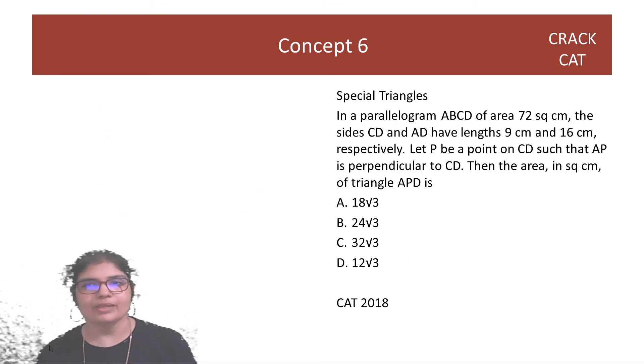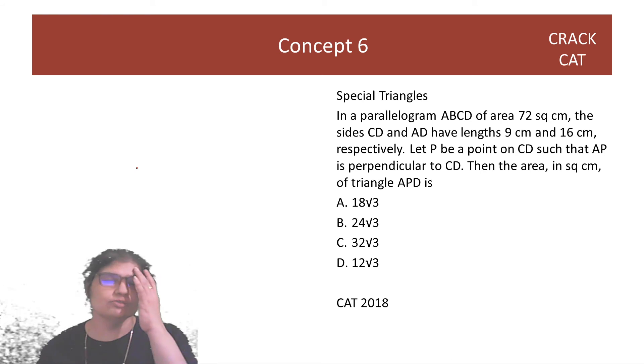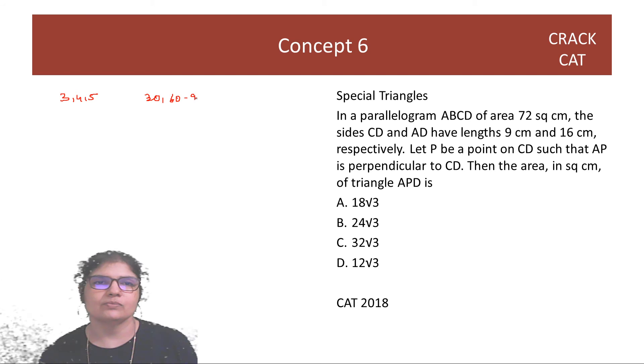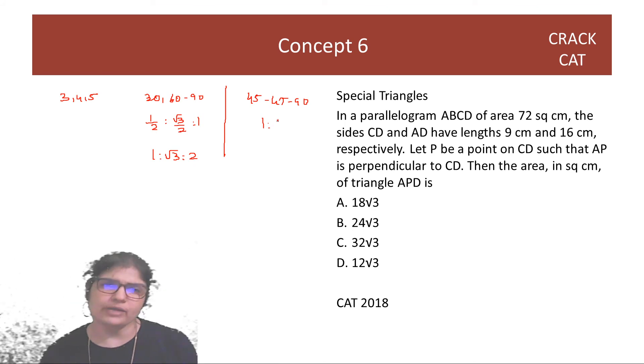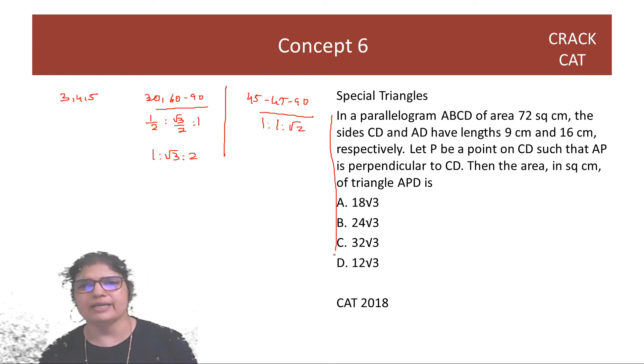The sixth concept is know some special triangles. Which special triangles? We have already discussed 3, 4, 5. This is an important triangle for us. The other two triangles that I want you all to know is the 30, 60, 90 triangle. So what is the ratio of the sides? It is half is to root 3 by 2 is to 1 or you can also see this as 1 is to root 3 is to 2. This is another triangle. And the third triangle is the 45, 45, 90. So often somewhere in a triangle if you see a root 2, you know that 45, 45, 90 is involved. If you see a root 3, you know that this is somewhere involved. So in this question, if you see, look everywhere root 3, root 3, root 3.